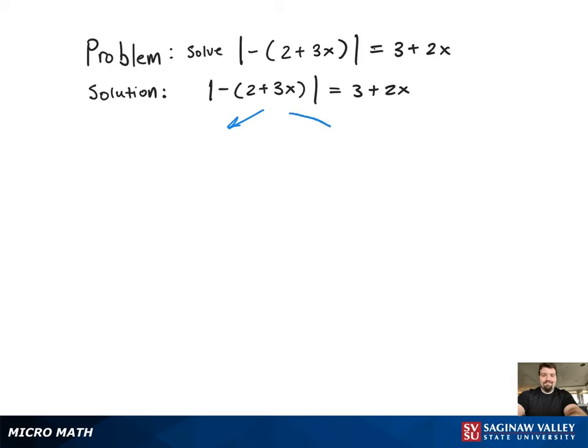Since the absolute value is solved for in this problem, all we have to do is set the argument of the absolute value equal to 3+2x and then negative of the quantity 3+2x.